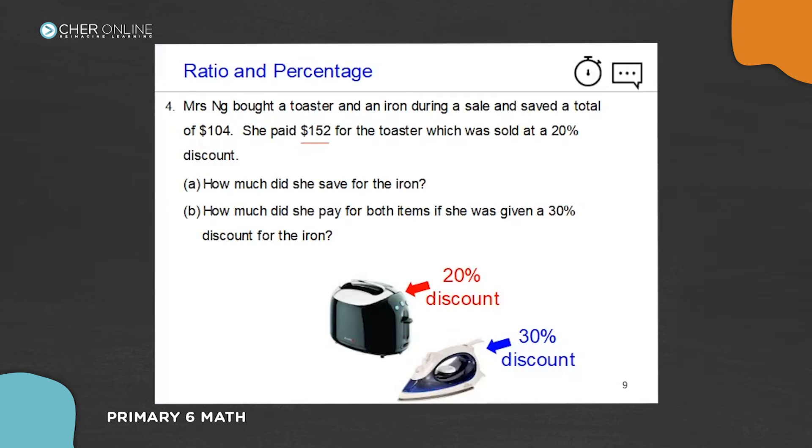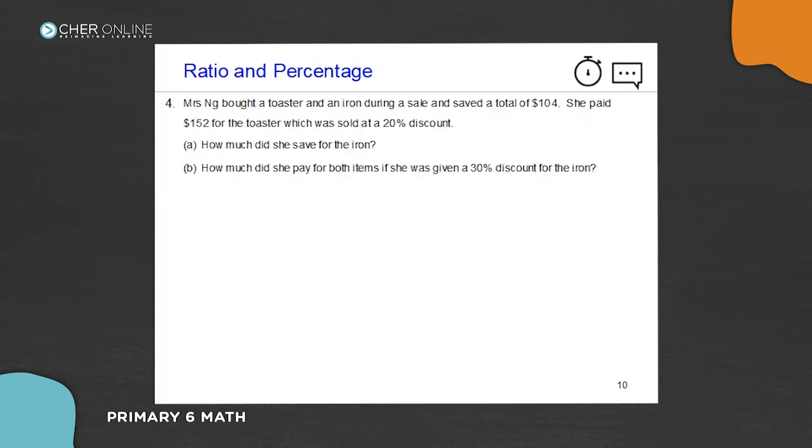Let's move on. She paid $152. So how much did she save for the toaster and for the iron? And at the end, we want to find what she paid for both items. So let's look at it again.